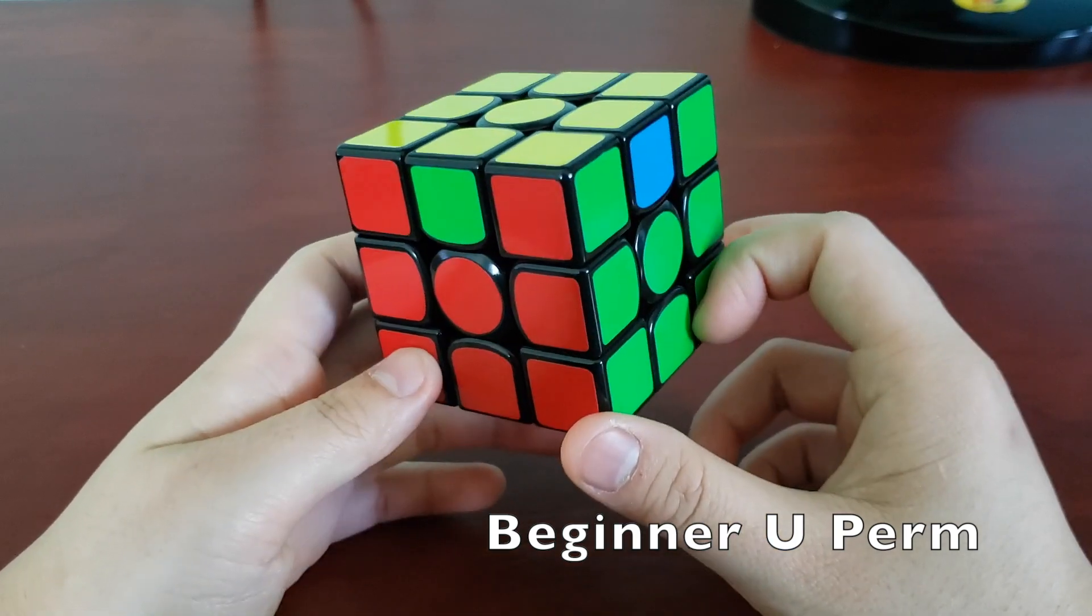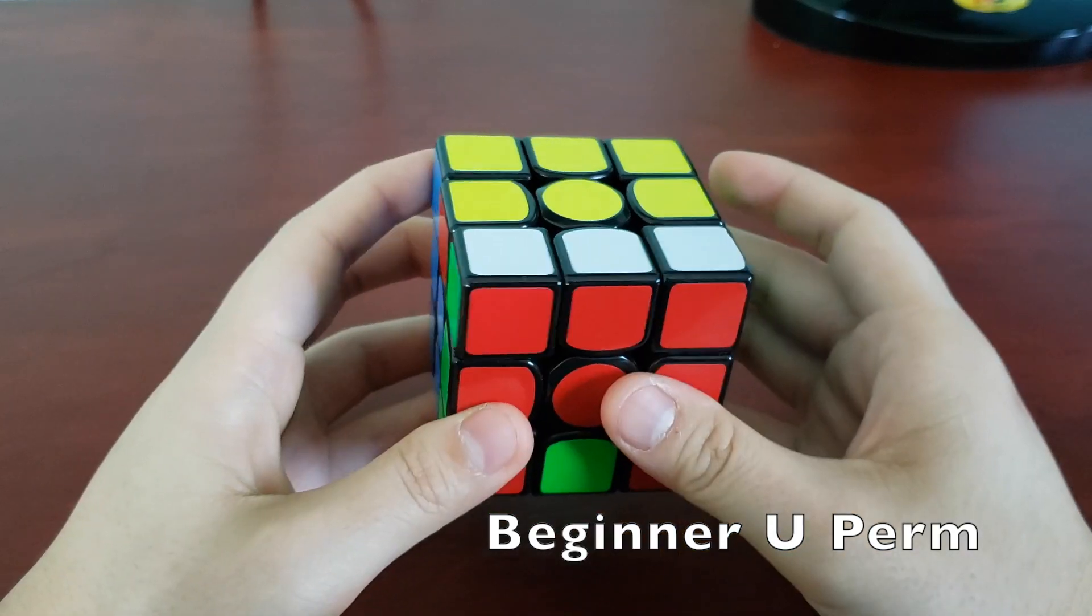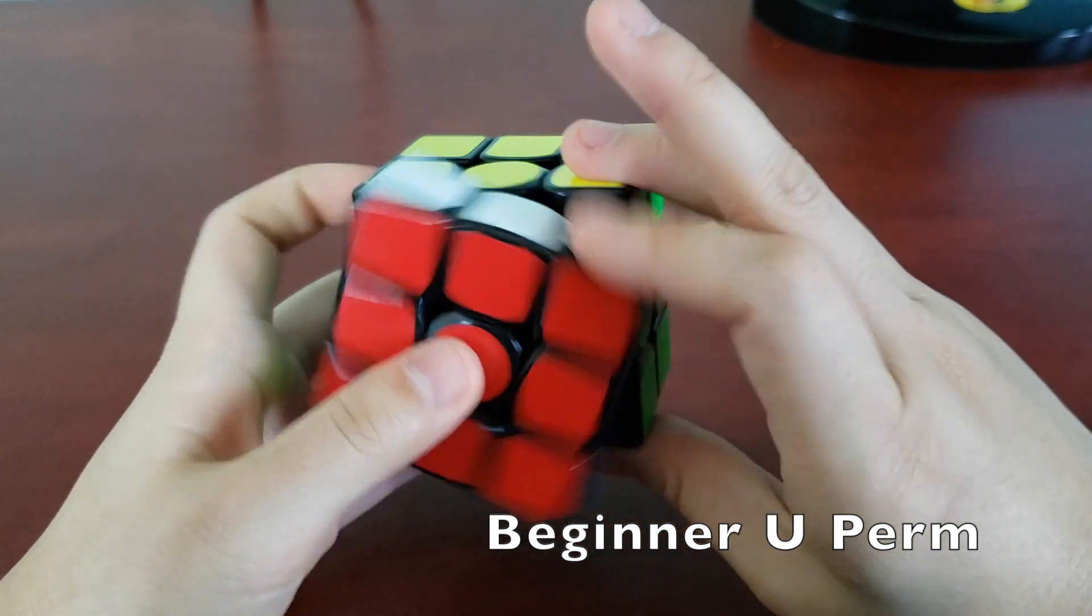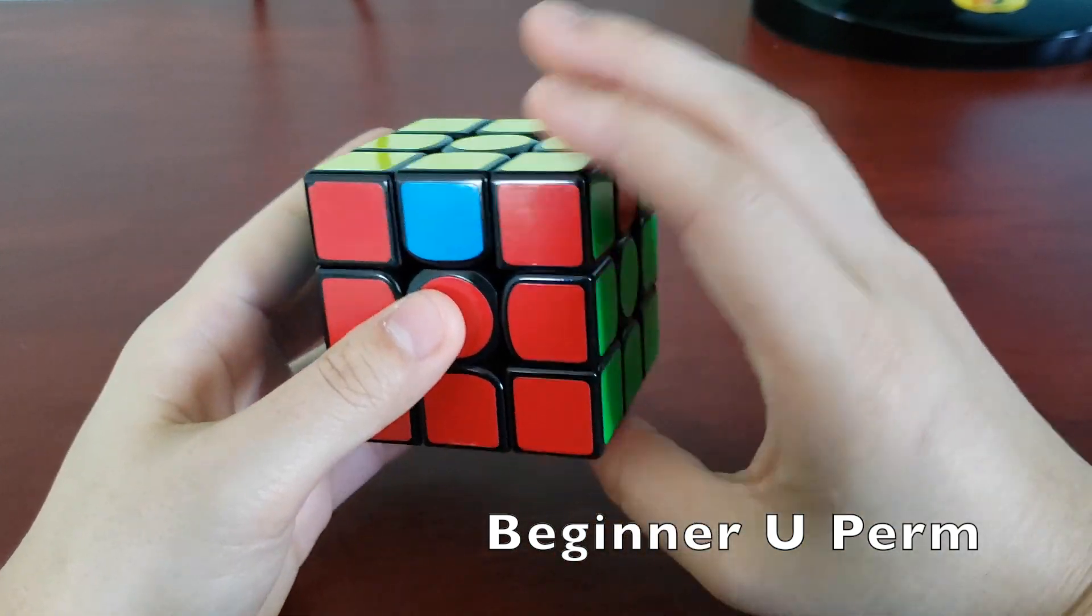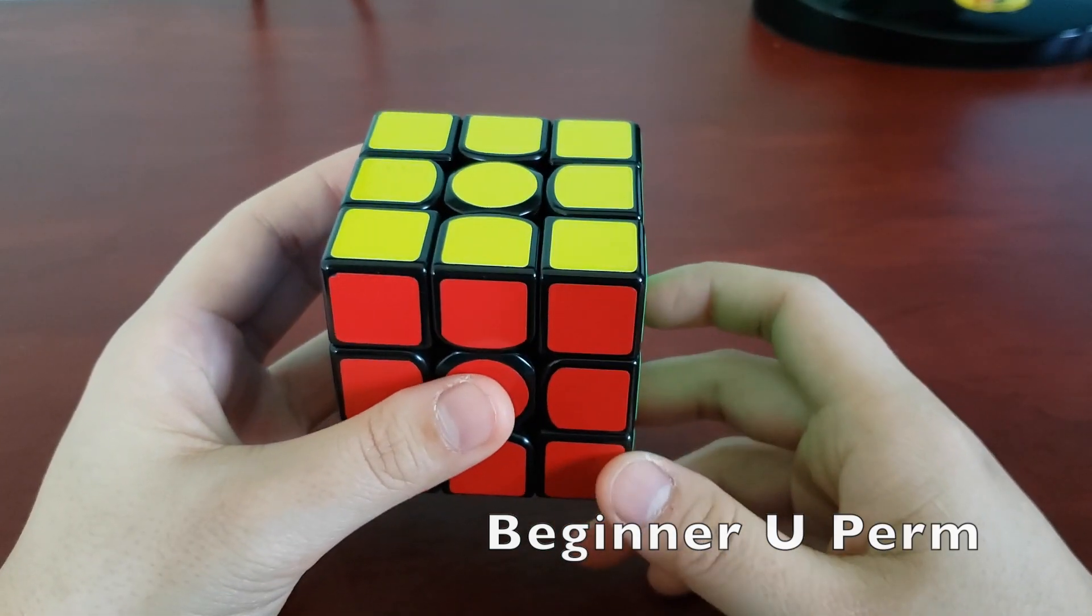Now, you probably knew this algorithm at one point without the cool finger tricks. It's the beginner U prime that a lot of people, myself included, learned as one of their first PLLs. Here is what it probably looked like when you used to execute it. This is the beginner method of execution. If you'll recall, many of you may have learned it this way. Or from the other side. Can you see the parallel for how the fancy algorithm is just a better way to execute the same algorithm?